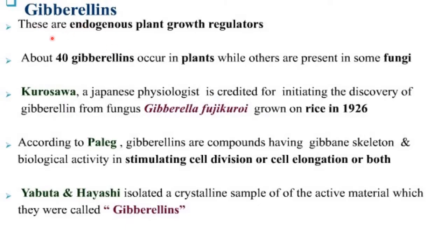Gibberellins are endogenous plant growth regulators. About 40 Gibberellins occur in plants while others are present in some fungi. Kurosawa, a Japanese physiologist, is credited for initiating the discovery of Gibberellins from a fungi, Gibberella fujikuroi, grown on rice in 1926.